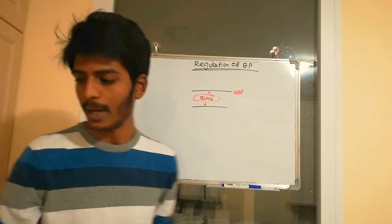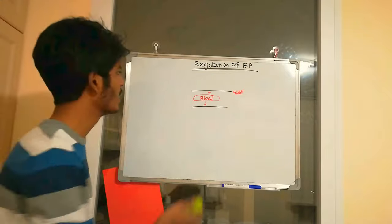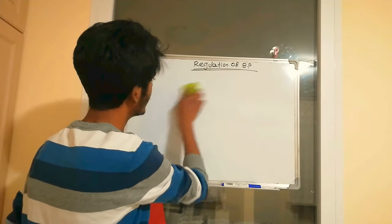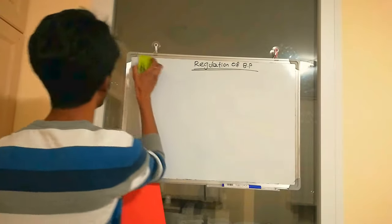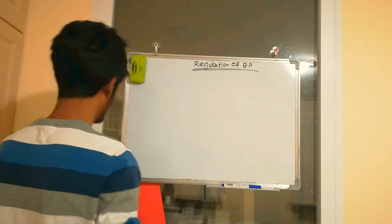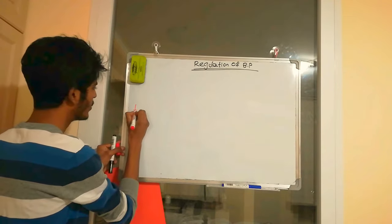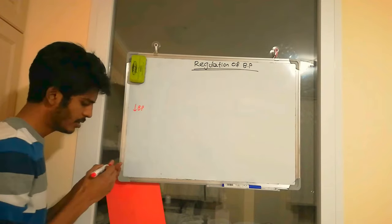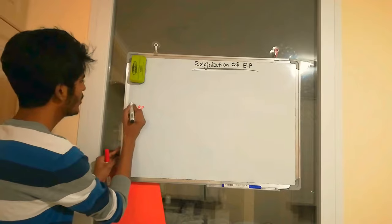Now we'll discuss majorly about regulation of blood pressure — how blood pressure is regulated in the body. Let's take a condition where there is decreased blood pressure and see what happens.